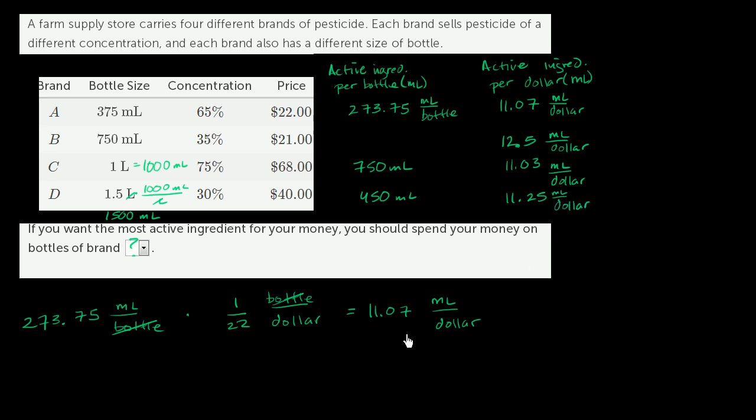So which one is the best deal? Well, the best deal is the one where I get the most milliliters per dollar. And that's brand B right over here. I get 12.5 milliliters per dollar. I'm getting the most pesticide for my buck.